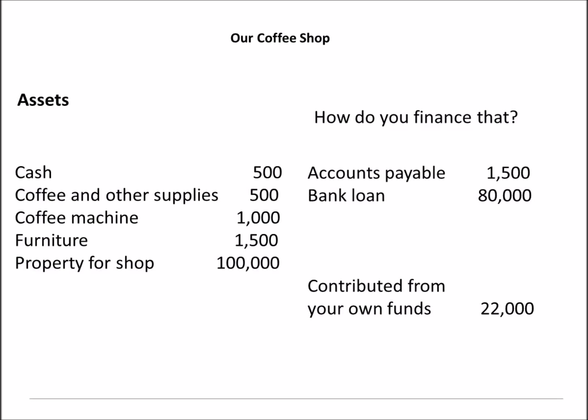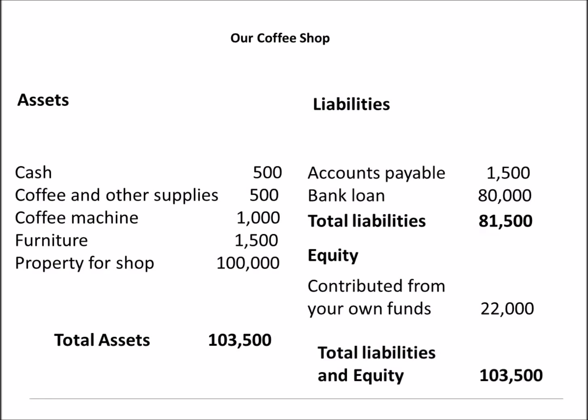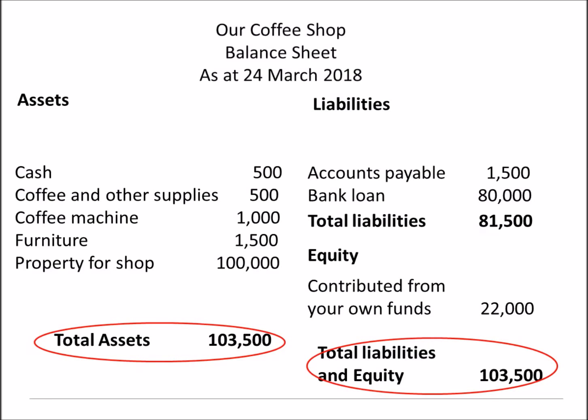We have total assets of $103,500. On the other side, the items that we've got an obligation to pay back to an external party are called liabilities. We have total liabilities of $81,500. What we've contributed ourselves is called equity — this is our equity or value in the business. If we were to sell our assets and pay off our liabilities, then the equity is what we have left for ourselves. The total liabilities plus equity is $103,500, which equals our total assets.